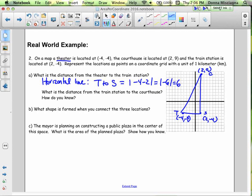Distance from the train station to the courthouse - this is just a vertical line. So for this, we can use the absolute value of the Y coordinates, because we have a vertical line, right?